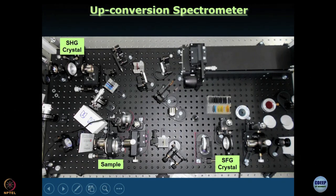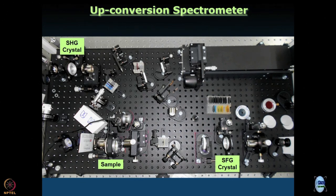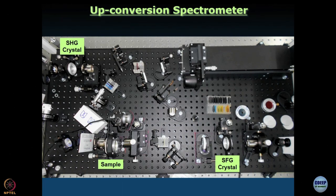What you see here — this black flat surface with a lot of holes — is a breadboard. If you go to any optics lab you will see breadboards like this. If you look carefully, this black surface with holes is sitting on a shiny surface with holes — that is the optical table top. The reason we have so many holes is that it is possible to use bolts and screws to fix pieces of optics on this surface. When we go to the lab and see everything in front of our eyes, I hope it will become clear.